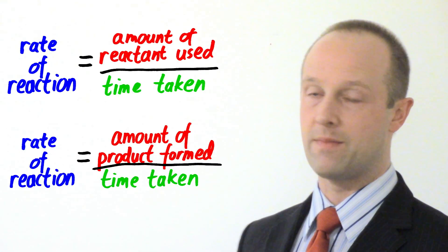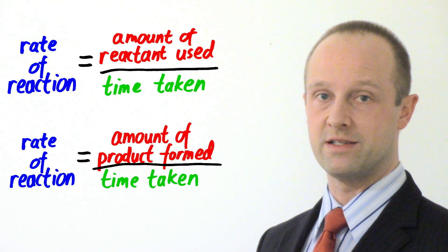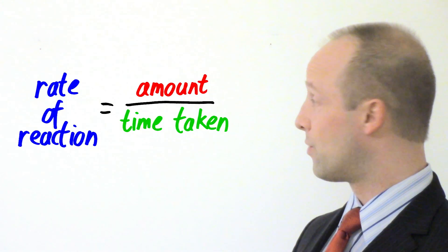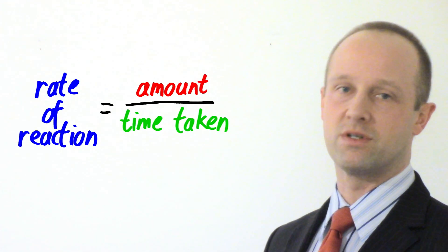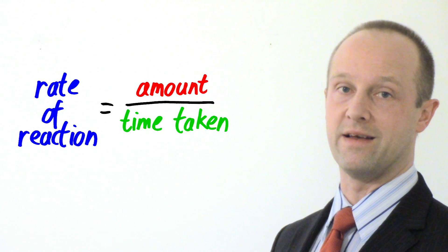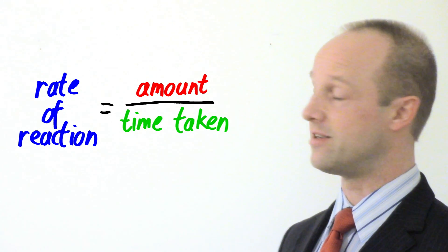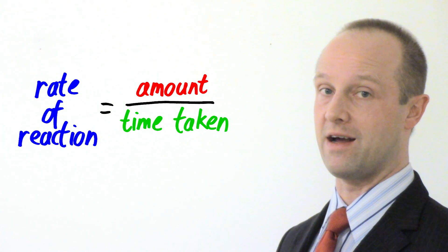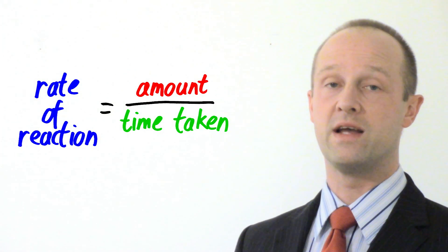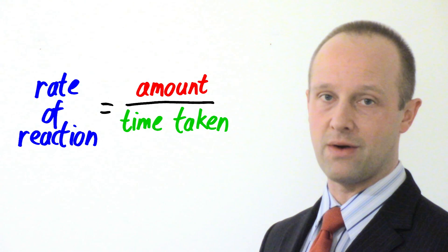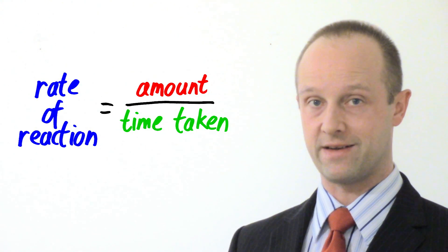So just remember, both of our equations here can just be summarized like this. The rate of the reaction is an amount of something divided by the time that it's taken. Every single time you're going to do the same calculation, you're just dividing by time. Rate is always per minute or per hour. It's always divided by time.